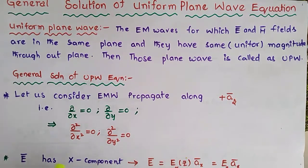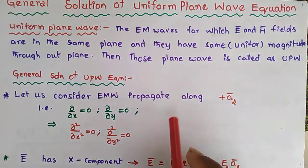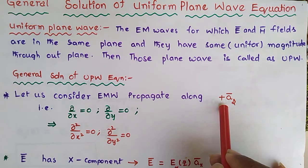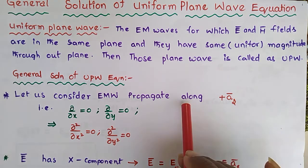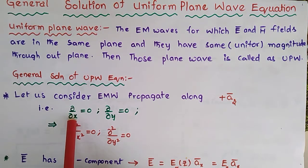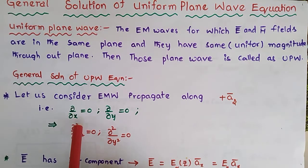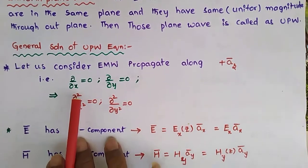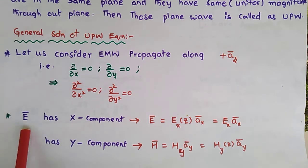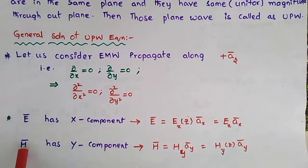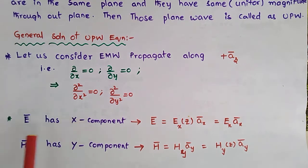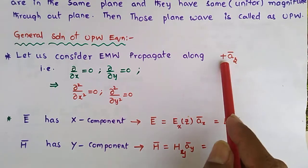So for finding the general solution, the first step is to establish the Uniform Plane Wave direction. The electric field and magnetic field are in the Uniform Plane Wave, and it depends on the direction.